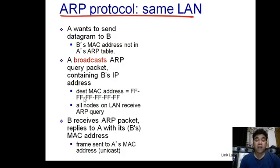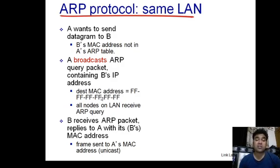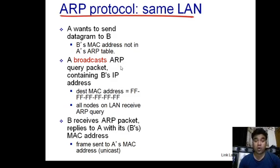Normally, when a frame arrives at a node, that node fetches the destination MAC address from the frame and matches it with its own MAC address — if they match, the frame is accepted; otherwise it is discarded. But in the case of an ARP query, the data link layer puts the universal broadcast MAC address in the destination MAC address field, so all nodes present in that network will accept that particular ARP query.